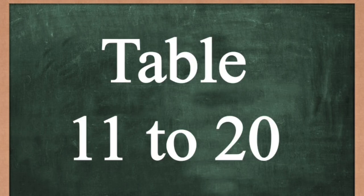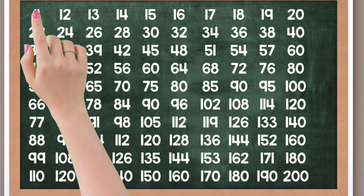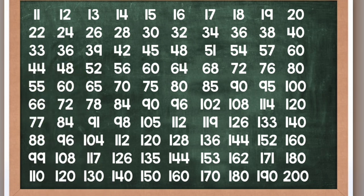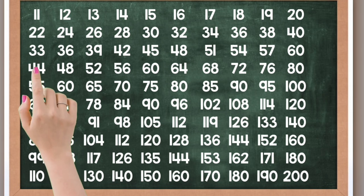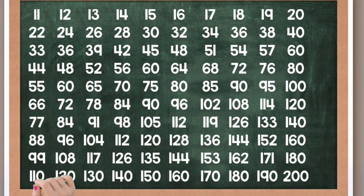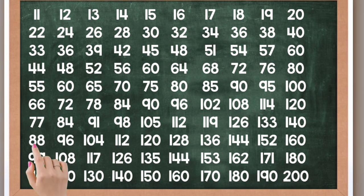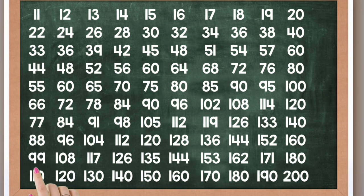Table 11 to 20. 11 times 1 is 11, 11 times 2 is 22, 11 times 3 is 33, 11 times 4 is 44, 11 times 5 is 55, 11 times 6 is 66, 11 times 7 is 77, 11 times 8 is 88, 11 times 9 is 99, 11 times 10 is 110.